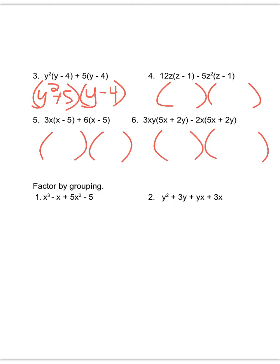So we have y squared plus 5 being multiplied to y minus 4, that's our final answer. Problem 4, 12z minus 5z squared multiplied to z minus 1.